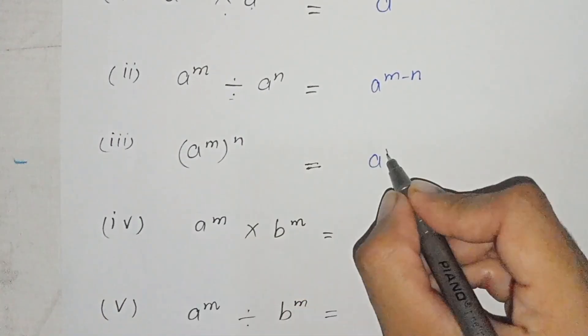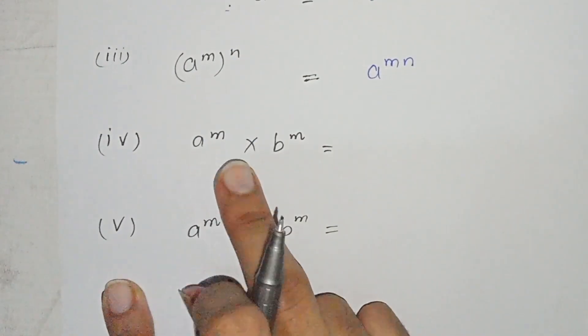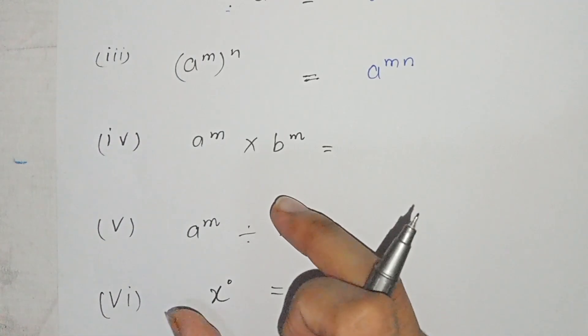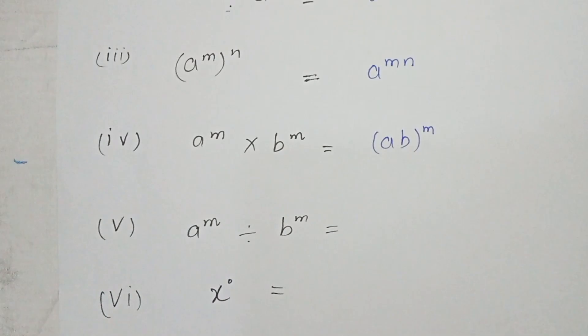The powers will multiply. Now the power is same, but the bases are different. So the bases are different. Under one power, we can combine them, like that: (ab)^m.